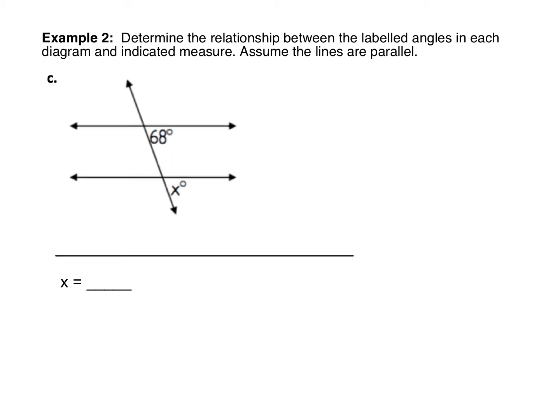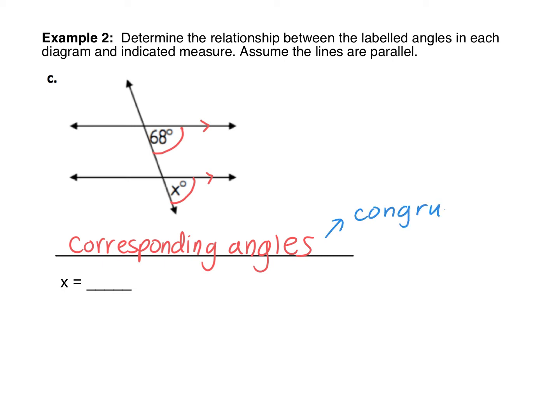In problem C, notice that the two angles are both to the right of the transversal and both below the parallel lines — essentially in the same spot. We have the 68-degree angle on the right of the transversal and below the top parallel line, and angle X to the right of the transversal and below the bottom parallel line. That makes these corresponding angles. By the corresponding angles postulate, corresponding angles are congruent, so X is also 68 degrees.